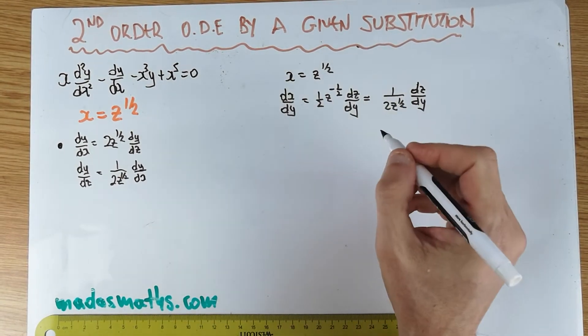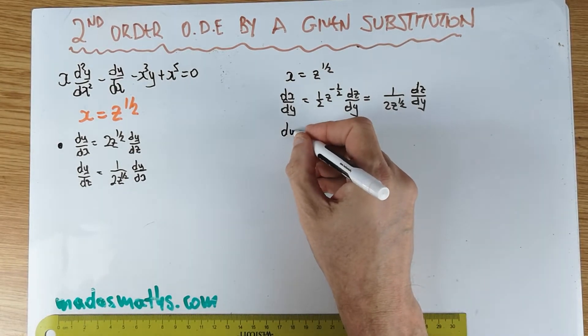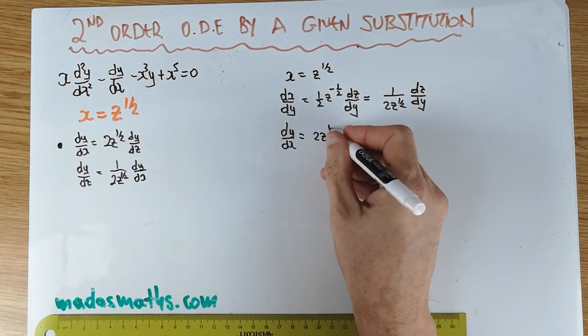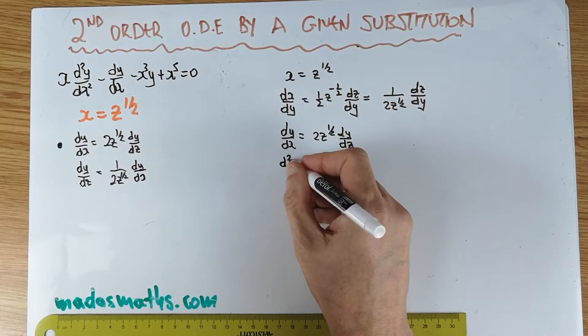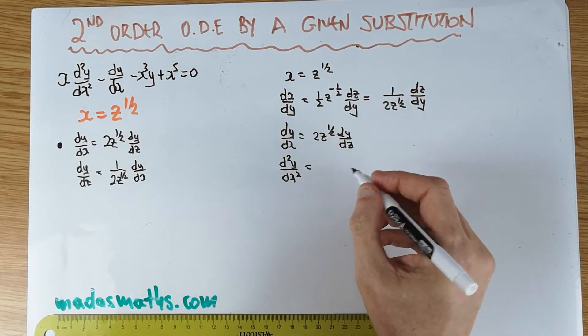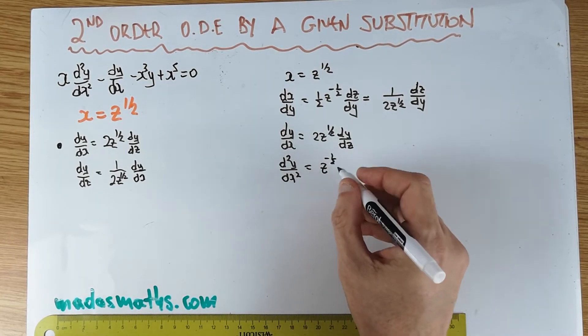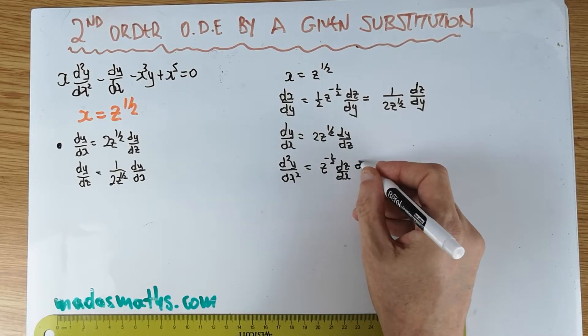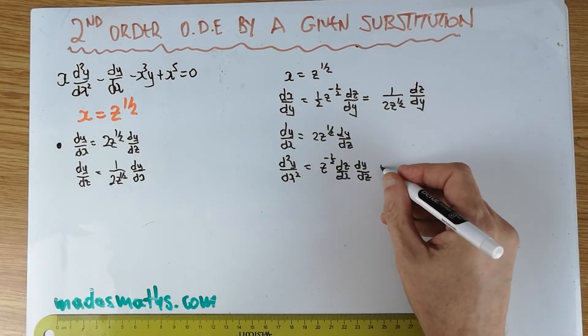We're going to take our dy by dx, which of course is this line here. I'm writing it again: 2z to the half dy by dz. And now we differentiate it once more with respect to x. And care for us, we have a product in there. Half times 2 is gone. z to the minus 1 half. z is the function of x, so it needs a dz by dx times a dy by dz. Product plus.